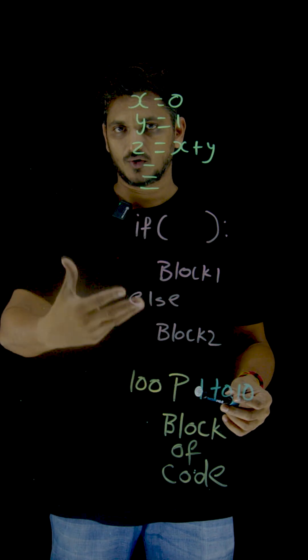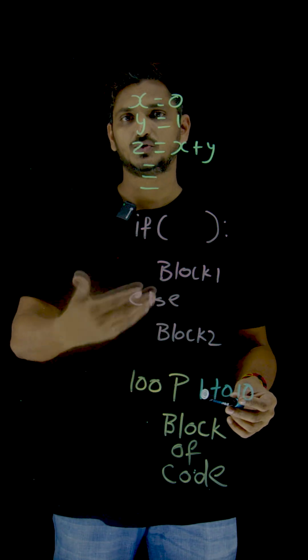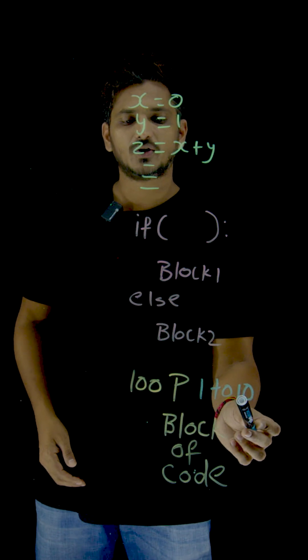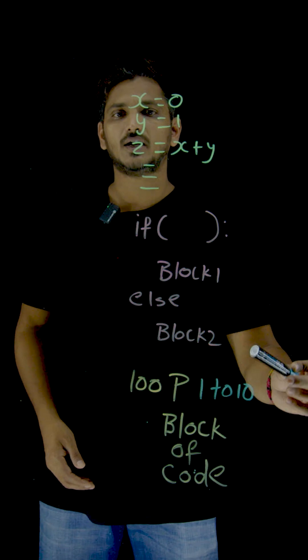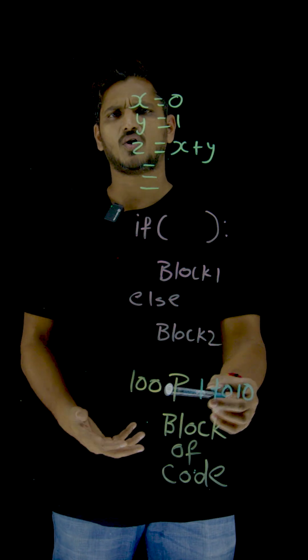In coming classes we are going to discuss about loop statements, how we write the code, how to write the logic, how we are going to use it. So loop executed for 10 times means execute this block of code 10 times.